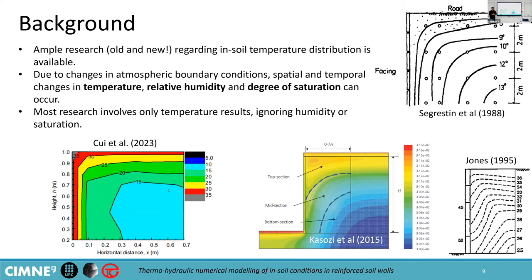There is ample evidence in the literature of the thermal response of two exposed phases structures. This differs from an infinite one-surface structure in the sense that we have two contours that incorporate the boundary conditions. As with temperature, changes in atmospheric conditions will change the in-soil distribution in time and in space of temperature, relative humidity, and in turn degree of saturation. Most of the literature just focuses on temperature distributions and ignores the changes in degree of saturation by using either a dry medium or a completely saturated medium, which, as we'll see with some results, is not the case in many scenarios.